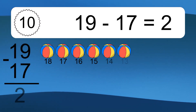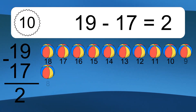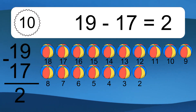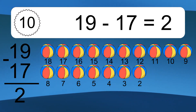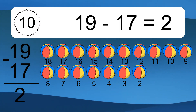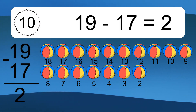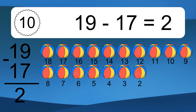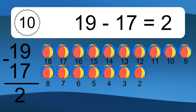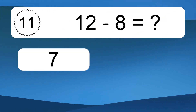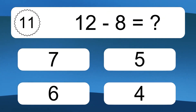19 minus 17 equals what? 19 minus 17 equals 2. Let's count it: 18, 17, 16, 15, 14, 13, 12, 11, 10, 9, 8, 7, 6, 5, 4, 3, 2.